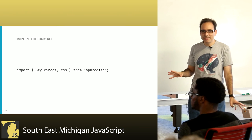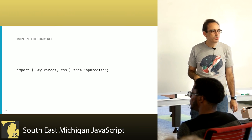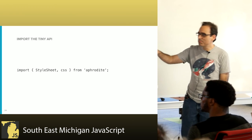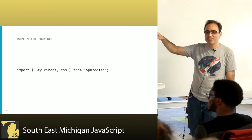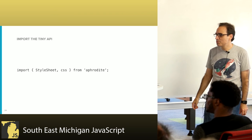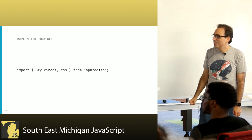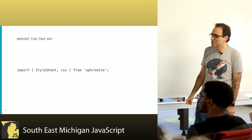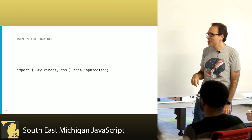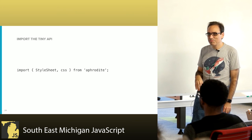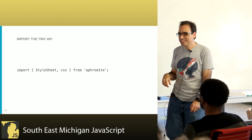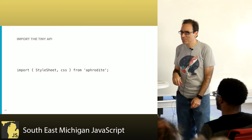Aphrodite has a tiny API that you use almost all the time, which is basically just importing StyleSheet and css — those two names are all you need to import. There are a few little details, but there aren't really many gotchas, because it's very straightforward.